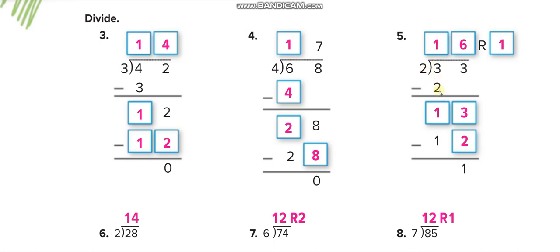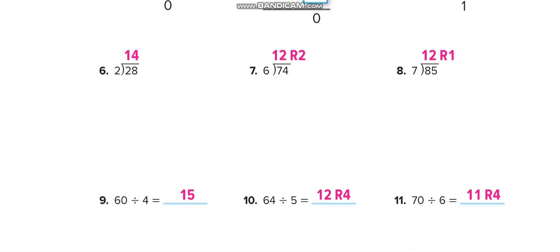2 times 1: 2. 3 minus 2: 1. Then bring the 3 down, it becomes 13. Now 2 times 6 is 12. And 2 times 5 is 10. So 10 is far from 13, 12 is closer to 13. And 2 times 7 is 14, more than 13. So the suitable one is 2 times 6: 12. 13 minus 12: 1. I hope you understand this.